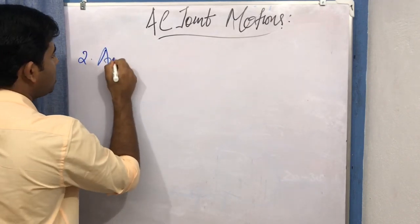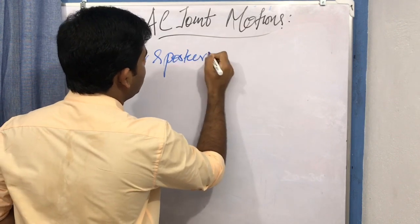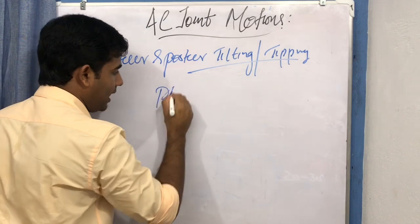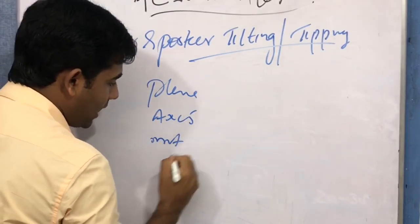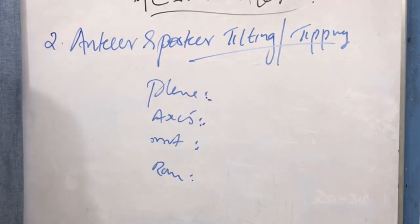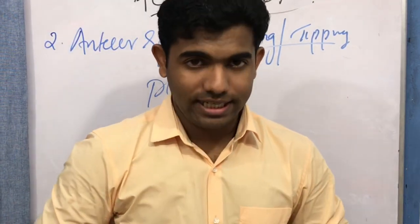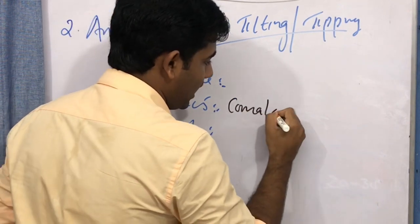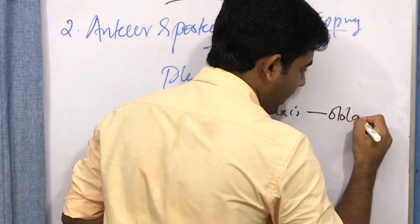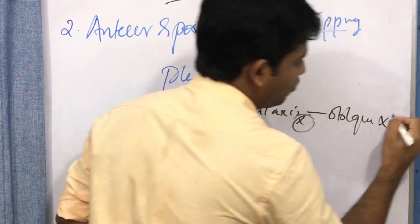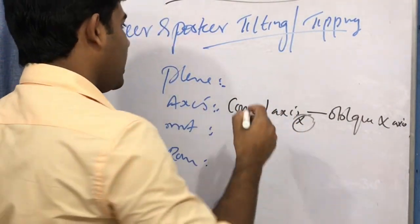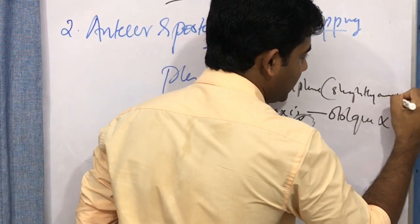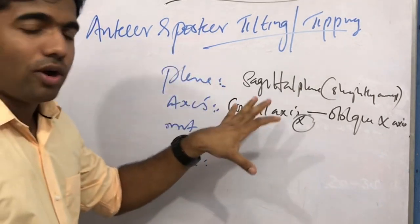The next movement is anterior and posterior tilting, also called tipping. Using the same strategy — axis, plane, movement, ROM — anterior and posterior tilting occurs in the coronal axis, which is the x-axis. Remember, it is not a pure coronal axis but an oblique x-axis. Therefore, the movement takes place in the sagittal plane — not purely in the sagittal plane, but slightly away from the pure sagittal plane.